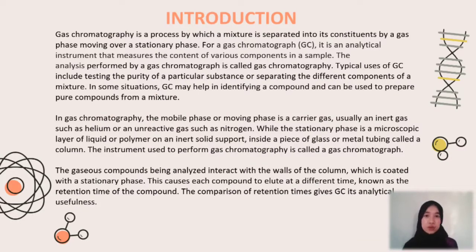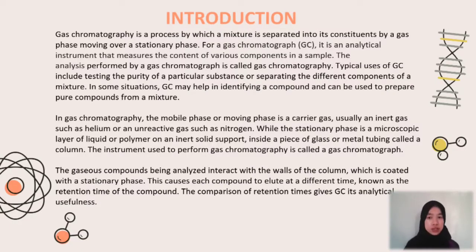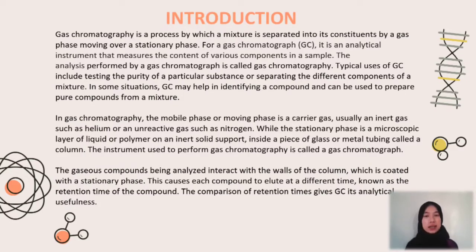For the introduction of gas chromatography, it is a process by which a mixture is separated into its constituents by a gas phase moving over a stationary phase. Typical uses of GC include testing the purity of a particular substance or separating the different components of a mixture. The mobile phase is a carrier gas such as helium and nitrogen, while the stationary phase is a microscopic layer of liquid or polymer on an inert solid support inside a column. The instrument used to perform gas chromatography is called a gas chromatograph.